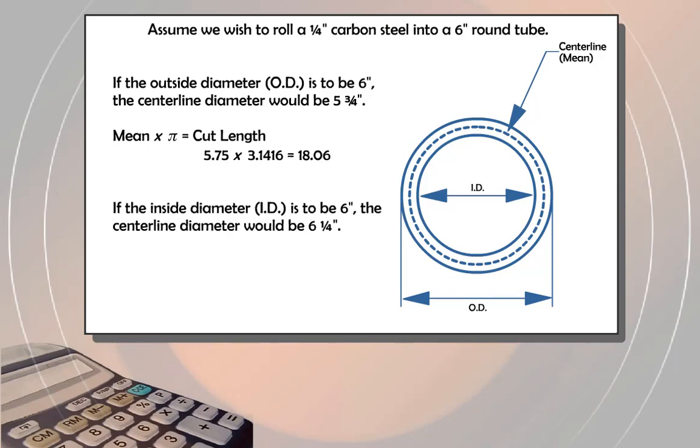If the inside diameter, or ID, is to be 6 inches, the centerline diameter would be 6¼ inches. Using the same formula mean times pi equals cut length, this turns into 6.25 times 3.1416 equals 19.63.